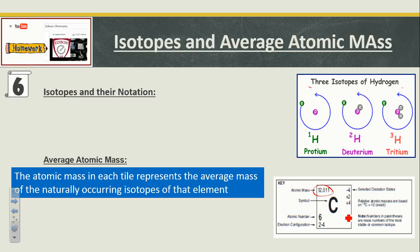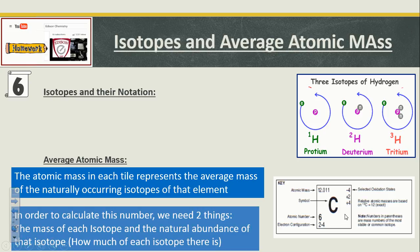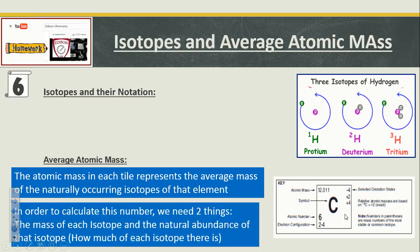That's because not all carbons have six protons and six neutrons. Some of them, a very small number, have six protons and seven neutrons. And then even a smaller portion has six protons, maybe eight neutrons. So the average atomic mass needs to reflect that not all isotopes of elements are created equal.